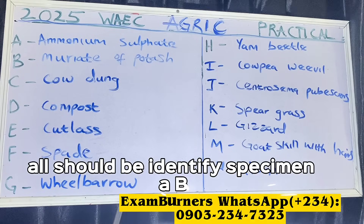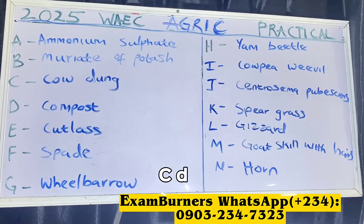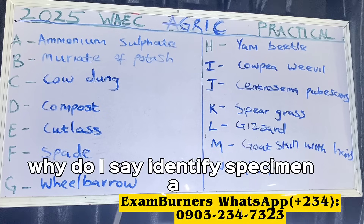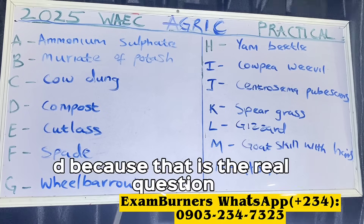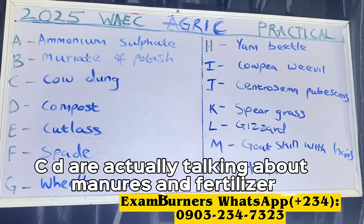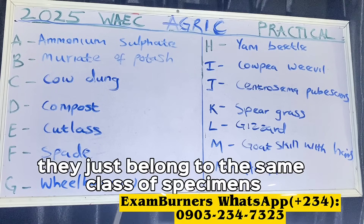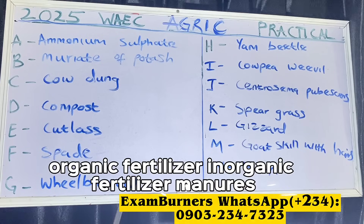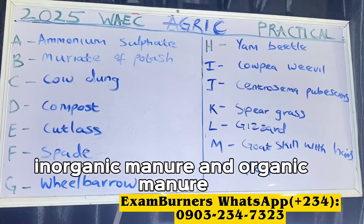Your first question in the exam should be: identify specimens A, B, C, D. I say this because that is the real question format. Specimens A, B, C, D are all talking about manures and fertilizers, so they literally belong to the same class of specimens — organic fertilizer, inorganic fertilizer, and organic manure. Note that manures are majorly organic, so we don't have inorganic manure.